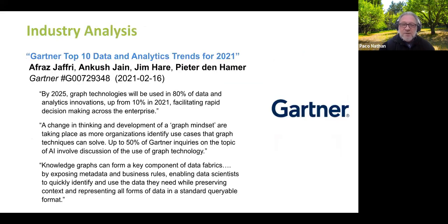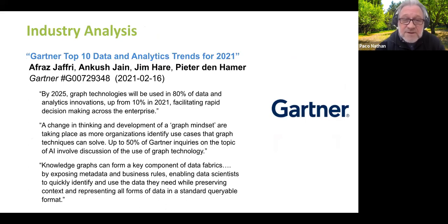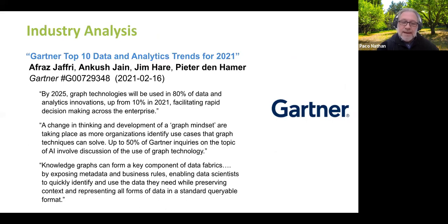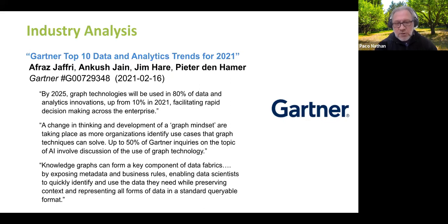Just a couple of days ago, I found out that Gartner reversed their decision about the future of knowledge graphs. They're saying that 80% of data analytics by 2025 will be based on graph approaches — up from 10% this year — and that it really facilitates much more pervasive and rapid decision-making in enterprise. It's kind of a change of thinking: a graph mindset. Currently Gartner has seen 50% of the inquiries about AI are graph-related.